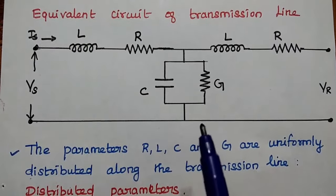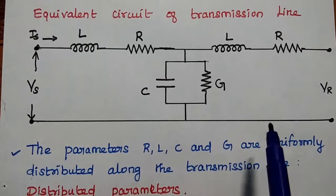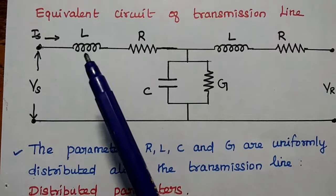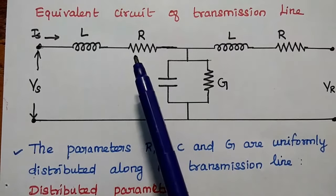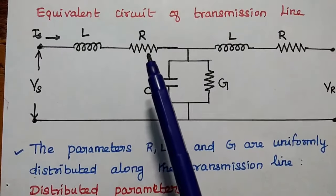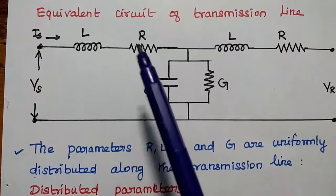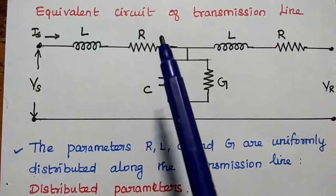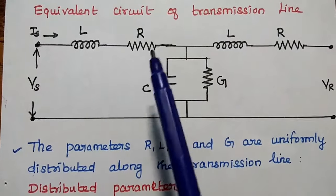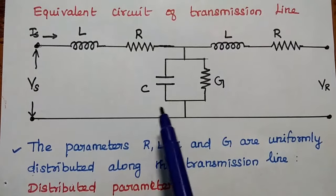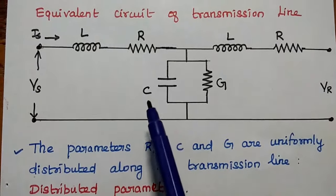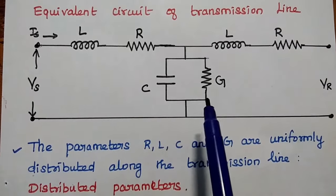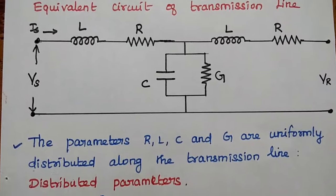This is the equivalent circuit of the transmission line. Here the parameters inductance and resistance form the series impedance — these two are the series parameters. Capacitance and conductance form the shunt admittance for this transmission line.